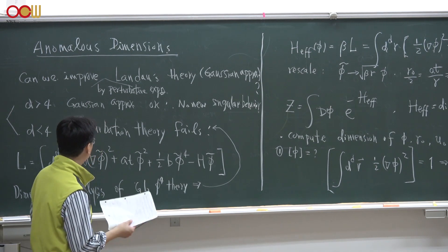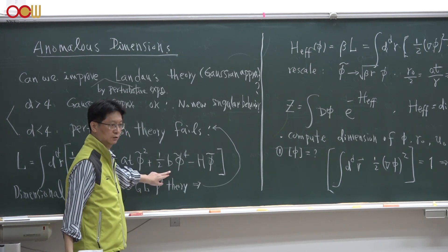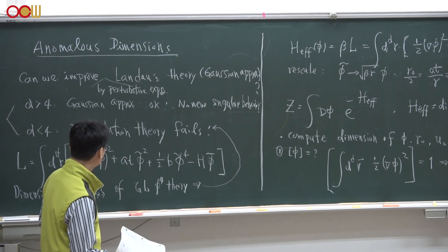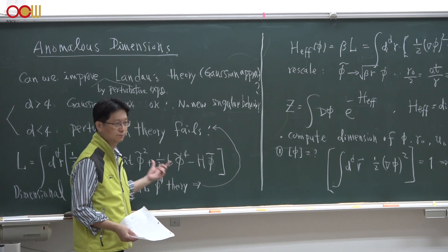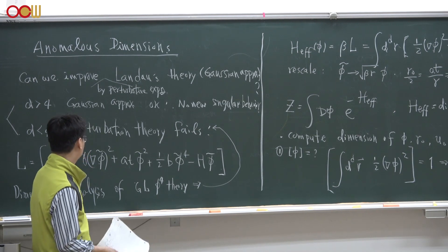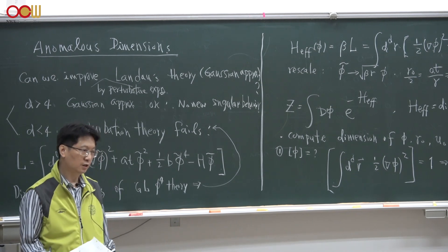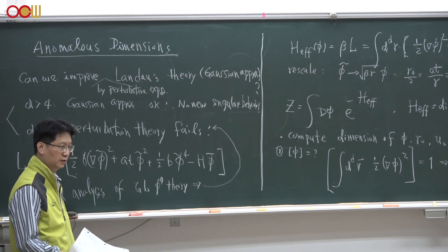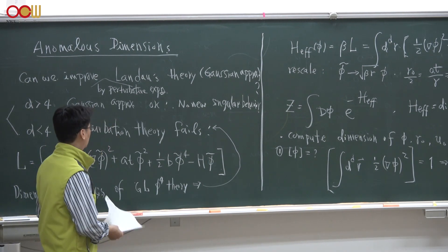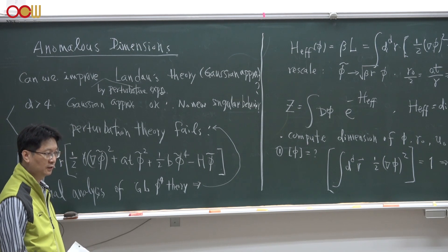We could improve this Landau theory by including the quartic term, phi to the power 4, in the Gaussian form, and then do perturbation in terms of this quartic term. In principle we are able to do so, but in this chapter we'll see that the perturbation theory fails for dimensions less than 4, precisely the same reason we found earlier regarding the critical region where the Ginzburg criterion is violated. So in other words, any attempt to improve this Gaussian Landau theory should fail.